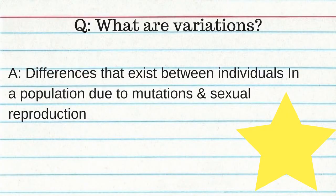Variations are differences that exist between individuals in a population due to mutations and sexual reproduction. Natural selection: since there are variations in all living things, the environment selects which traits are best suited to individuals within a population. The five points of Darwin's theory: population growth, struggle for existence, survival of the fittest, reproduction, and speciation.